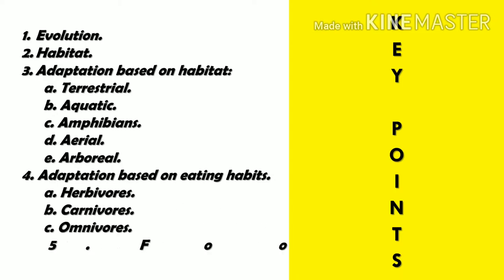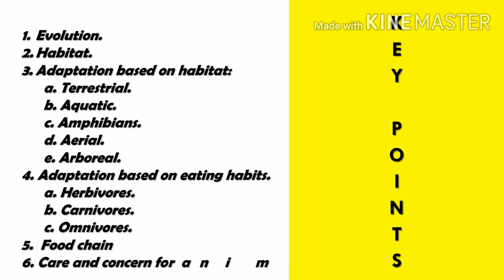Let us look at the essential key points. Number 1: Evolution. Number 2: Habitat. Number 3: Adaptation based on habitat — terrestrial, aquatic, amphibians, aerial, arboreal. Number 4: Adaptation based on eating habits — herbivores, carnivores, omnivores. Number 5: Food chain. And lastly, we will discuss about care and concern for animals.